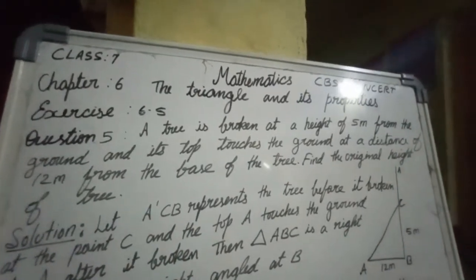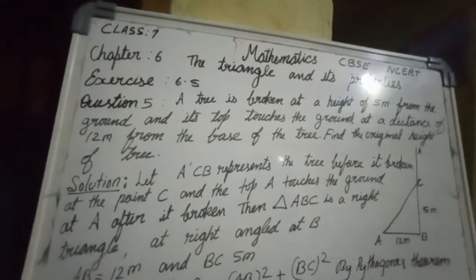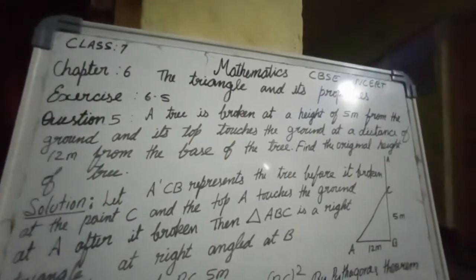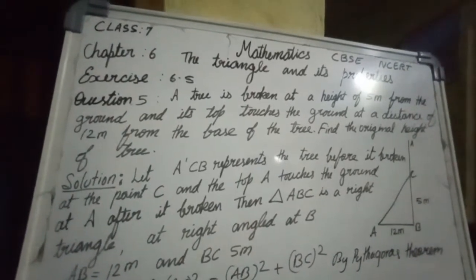Then triangle ABC is a right angle triangle at right angle at B. So let us see.